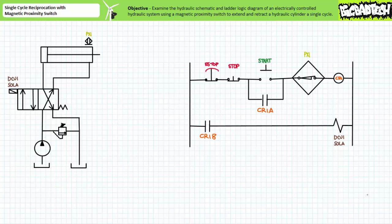Good day and welcome to Big Bad Tech. I'm instructor Jim Pytel and this is a short application example of an electrically controlled hydraulic system. Our objective is to examine both the hydraulic schematic and ladder logic diagram to predict the behavior of an electrically controlled hydraulic system using both operator initiated manual input and automatic mechanical input — in this case a magnetic proximity switch to extend and retract a hydraulic cylinder a single cycle.